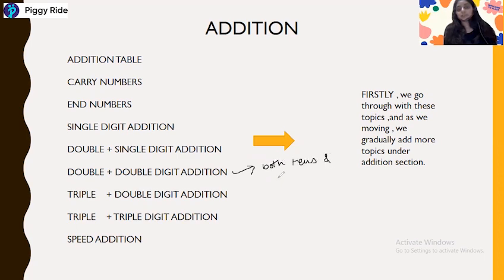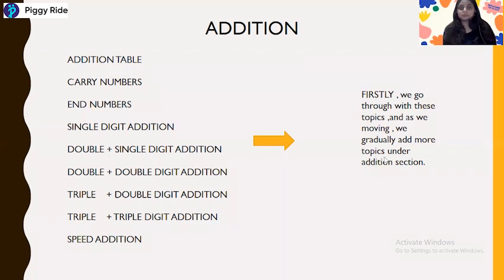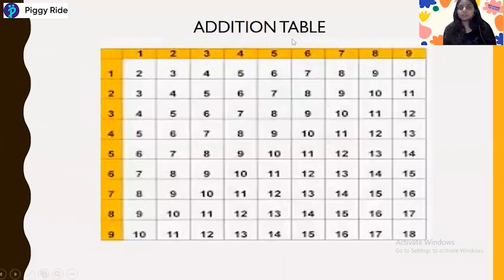So both the tens and ones place numbers are carry numbers. Let's do a quick revision of our previous classes before we move forward. As you remember the addition table — I told you to go through the table and learn the end numbers. For example, if I ask 8 plus 8, you just have to think in your mind.